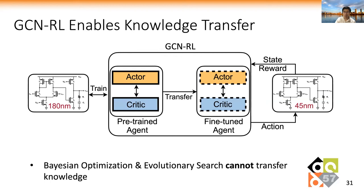Our GCNRL framework enables knowledge transfer since the knowledge of how to perform transistor sizing is stored in the weights of the agent. Therefore, we can apply the trained agent directly on other technology nodes or topologies. By contrast, Bayesian optimization and evolutionary search cannot support knowledge transfer because BO has a fixed design space, and ES keeps good samples in its population without summarizing the knowledge.